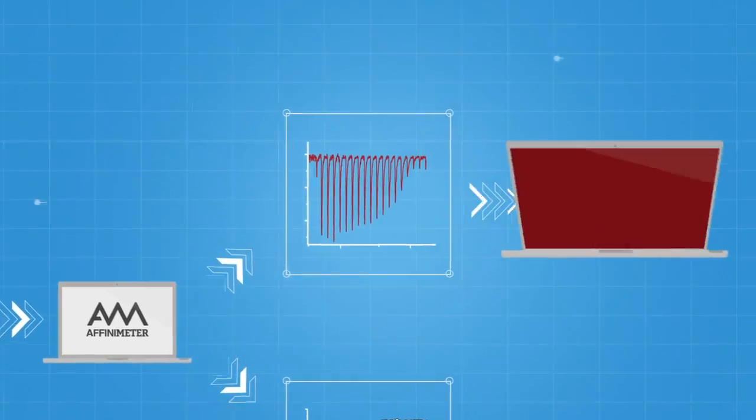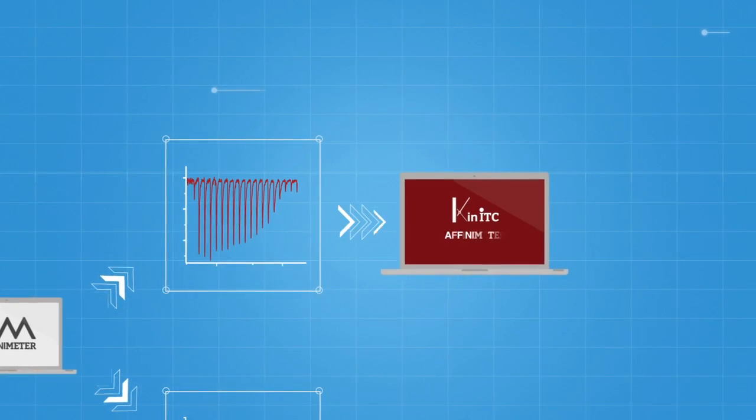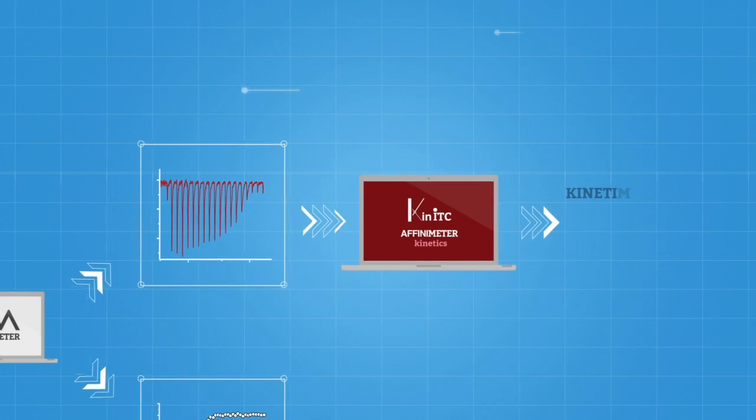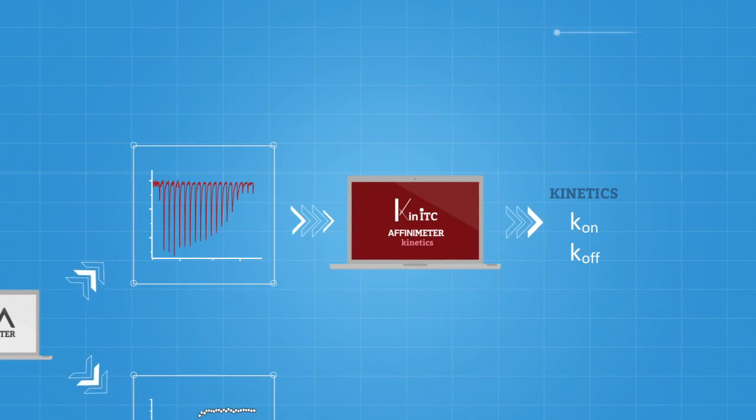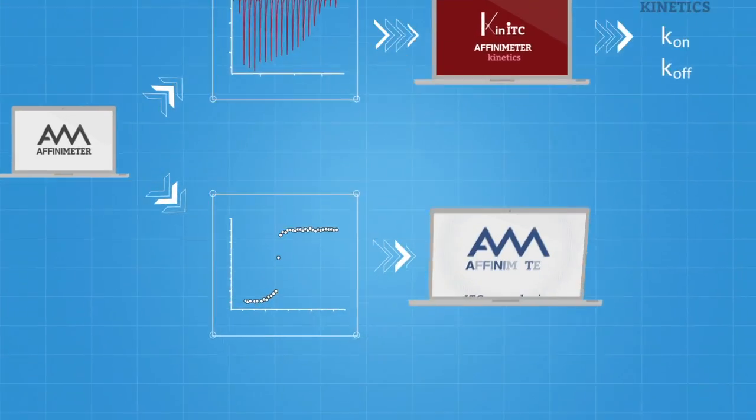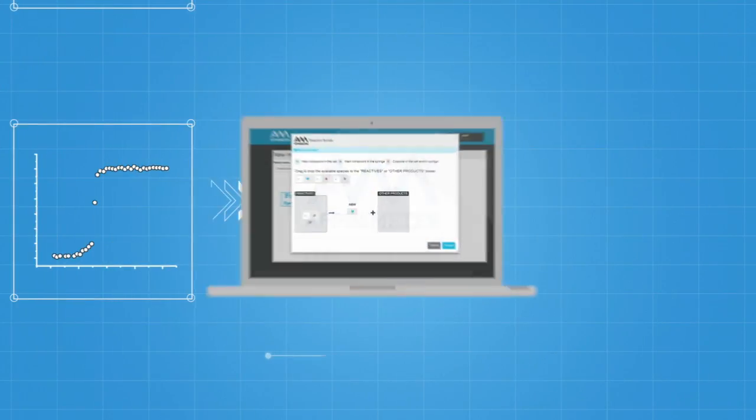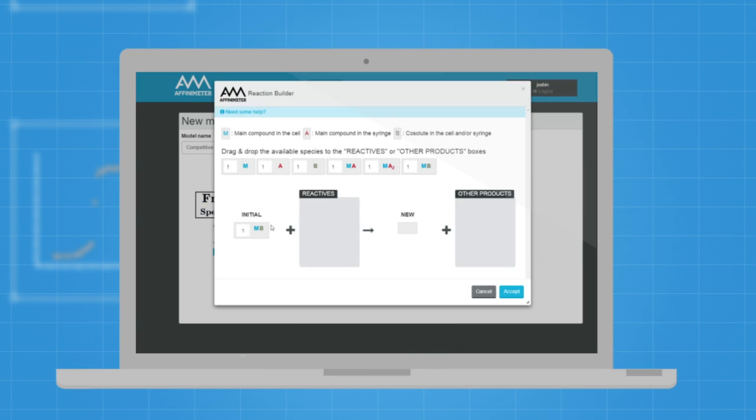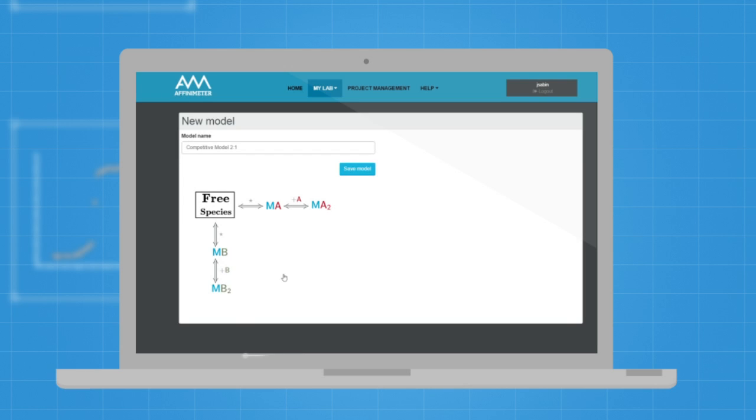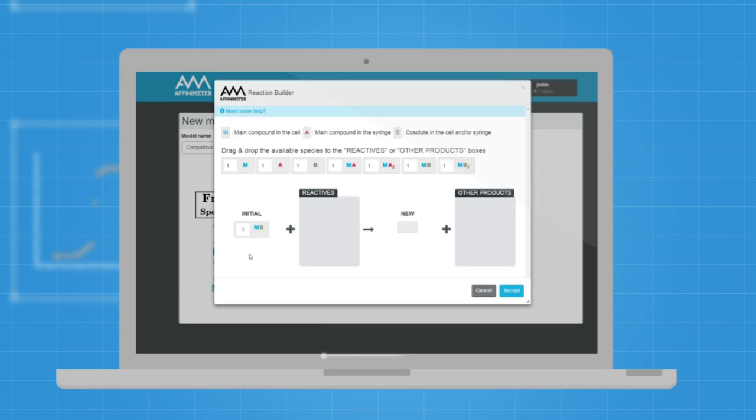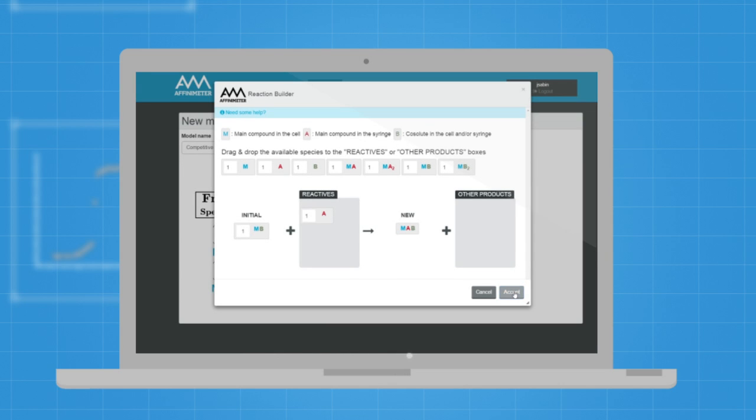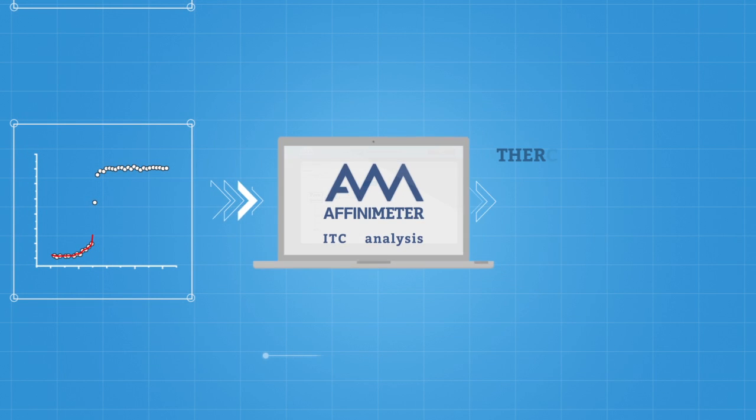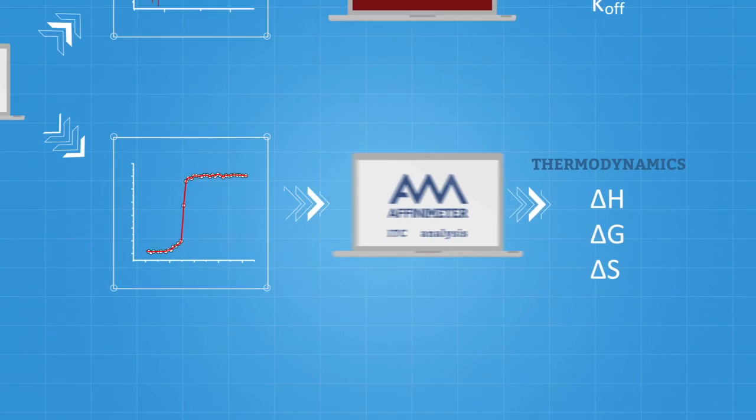Use our unique tool KinITC to extract kinetic information directly from the thermograms. Affinometer provides a collection of models to analyze isotherms of many different types of experiments. It also provides an easy to use tool to allow users to create original binding models. Not having the right binding model to describe a system will no longer be a reason not to analyze your isotherms.